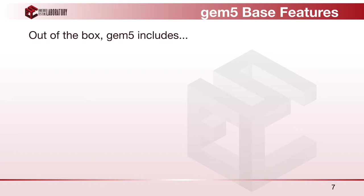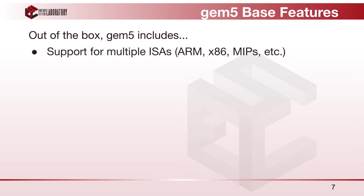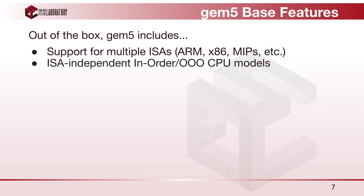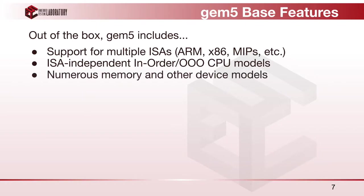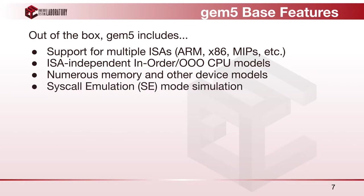GEM5 comes with numerous features right out of the box: it supports multiple instruction set architectures, its CPU models including in-order and out-of-order core models are ISA-independent, and it includes numerous memory and device models such as DDR3, DDR4, and cache. GEM5 also has two modes of operation: Syscall Emulation Mode (SE Mode) and Full System Simulation Mode (FS Mode). SE Mode is only for running user-space binaries; for accurate performance results you must use FS Mode, which simulates everything from hardware components to kernel to file system.